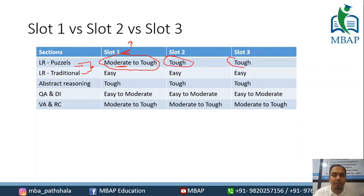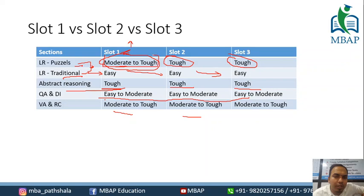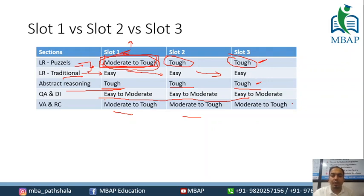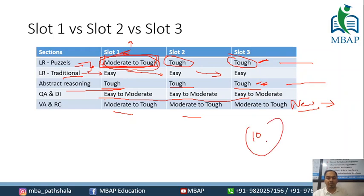Overall comparison: traditional logic was easy across all slots — easy, easy, easy. In abstract reasoning it was tough, tough, tough. Puzzles were tough compared to the other two slots. Some students may see scores a little down, but if someone has time management and saves time to invest wisely, scores will boost up by at least 10 marks.